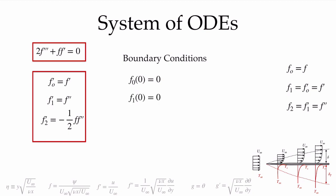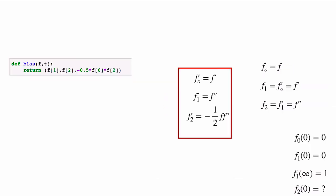We know f1, which is f prime and our non-dimensional velocity profile, is zero on the surface: f1(0) = 0. Far away from the plate, f1 equals 1. That far-field condition requires some work, because solvers using Runge-Kutta methods integrate from the initial conditions. What we really need is the value of f2 at zero, so we'll have to determine that.